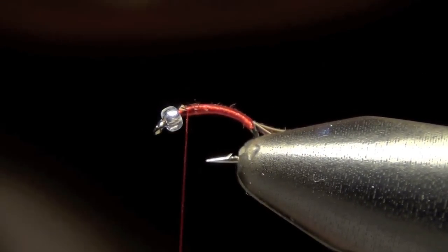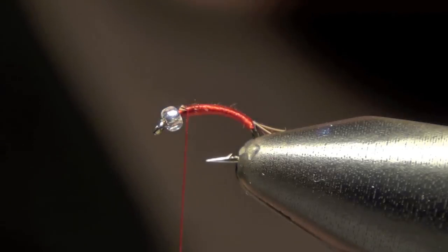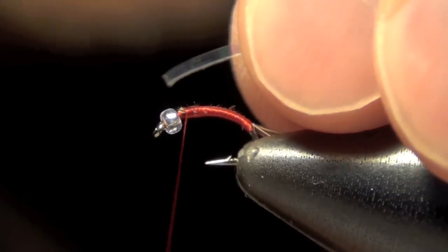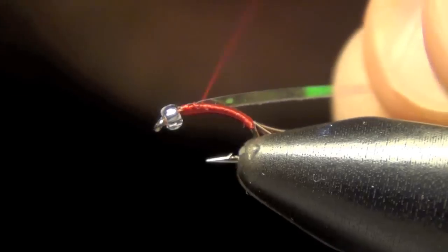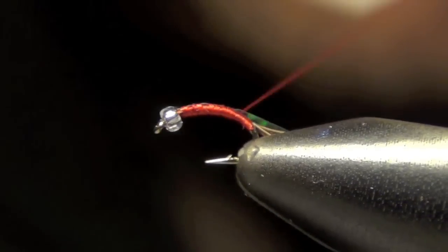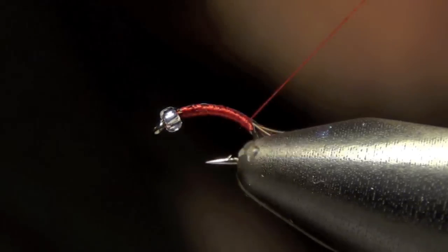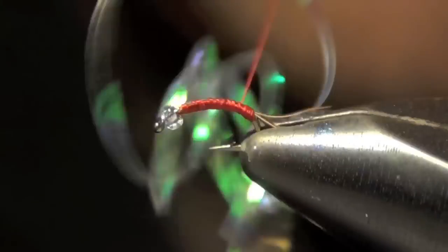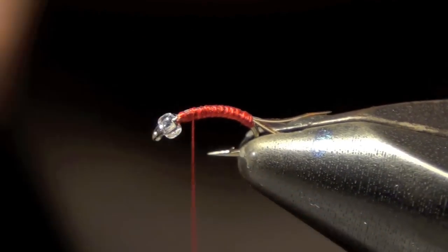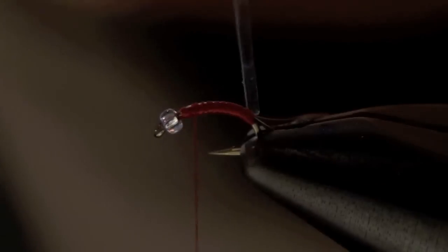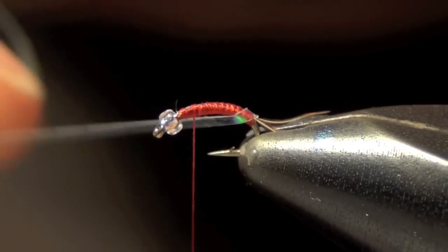The next thing I'm going to do is I'm going to take a piece of flashback material or flash-a-boo and I'm going to tie that in and I'm going to wrap down to the tail like so. I'm going to take it back forward and I'm going to stop about two thirds of the way up, about a third of the way back from the eye of the hook.